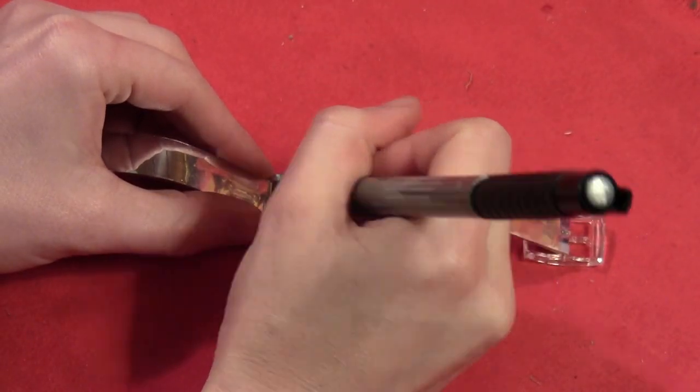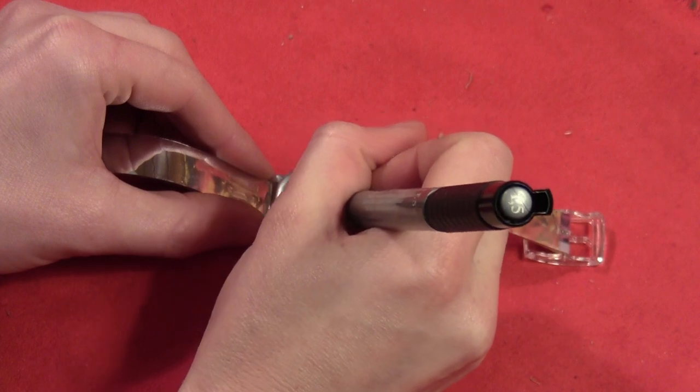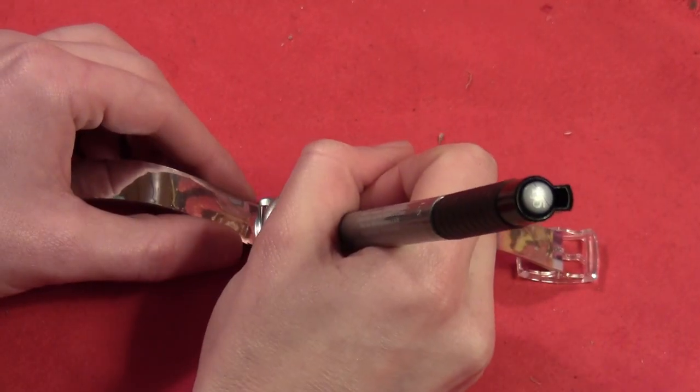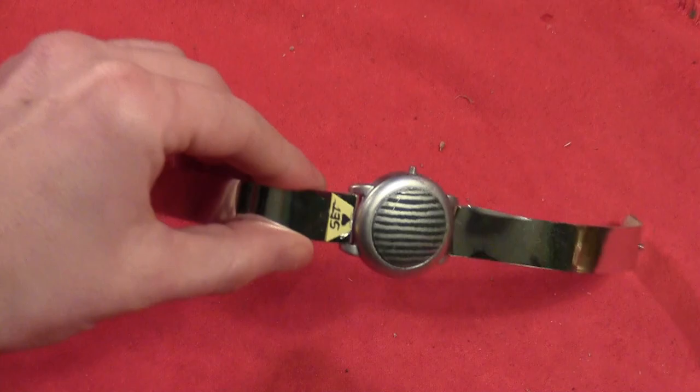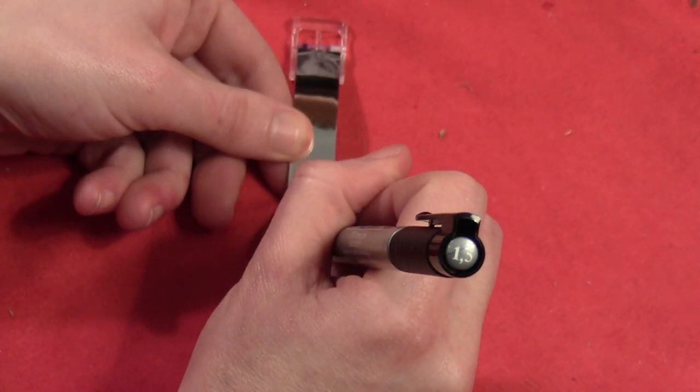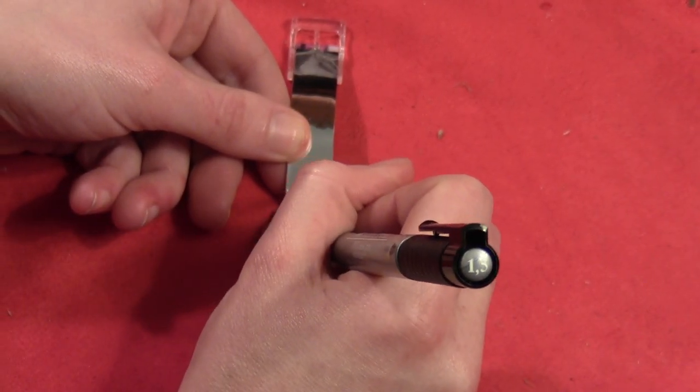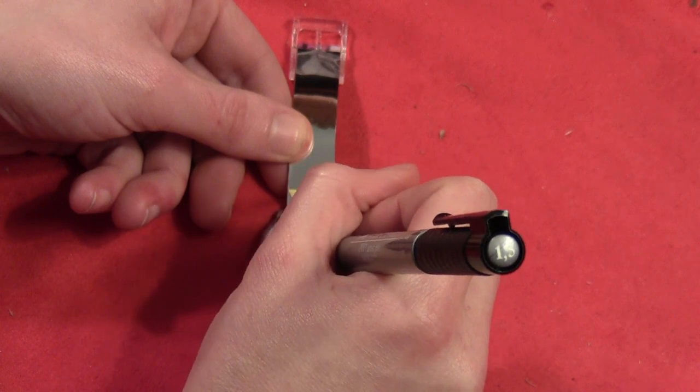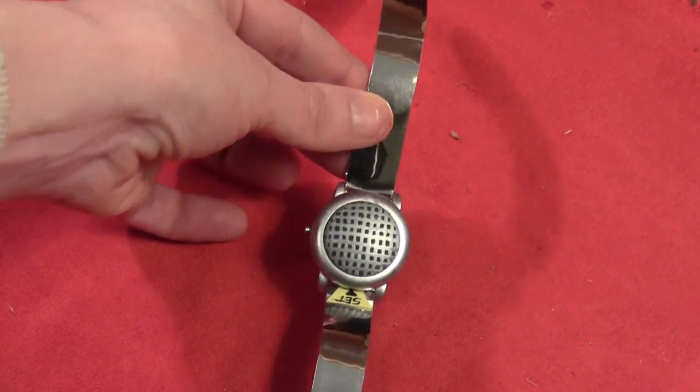And once that was dry I took a metallic silver pen and I just drew a bunch of lines across it, making a little grid and then going the other direction to finish off the grid. And that kind of makes it look like the speaker.